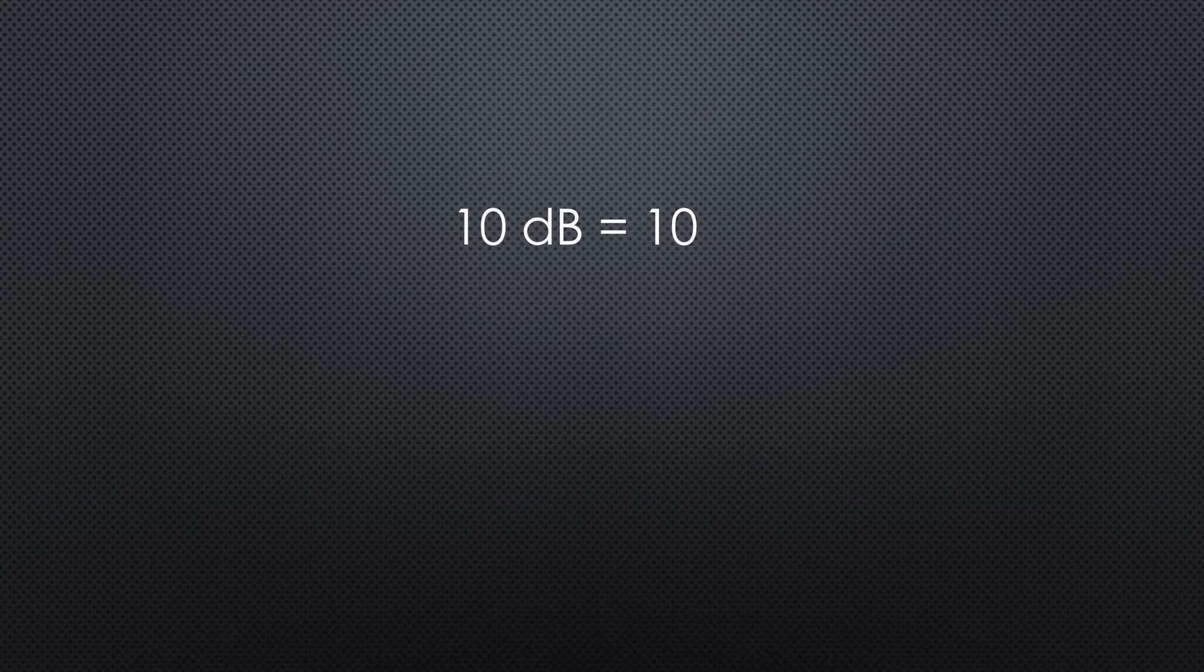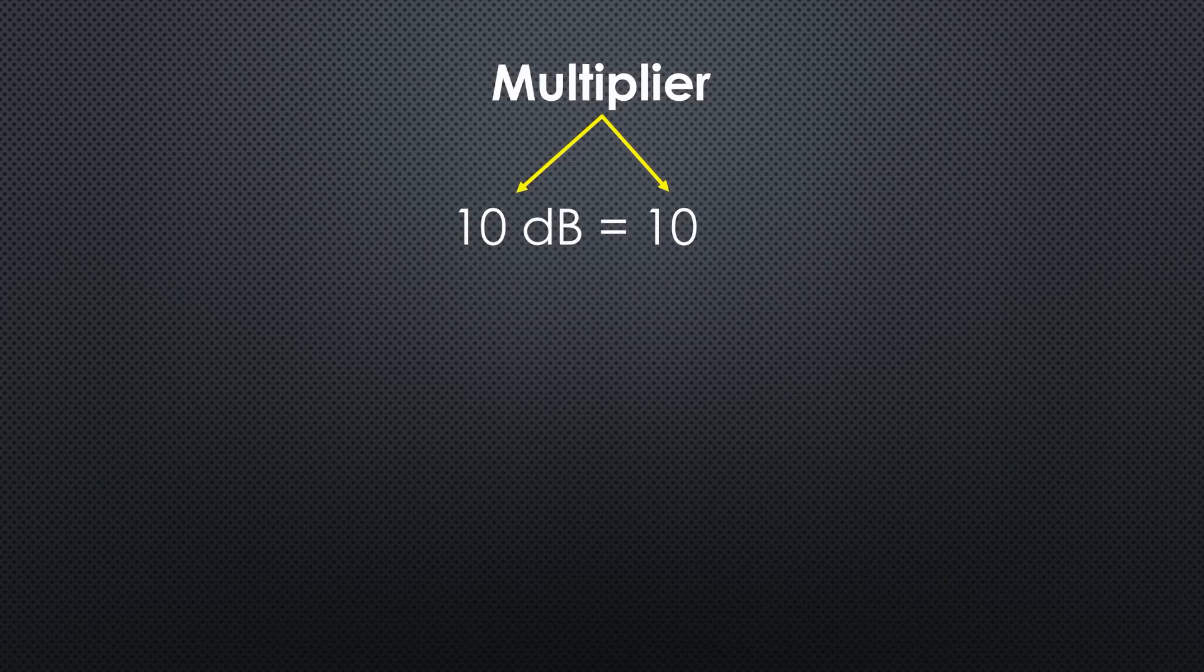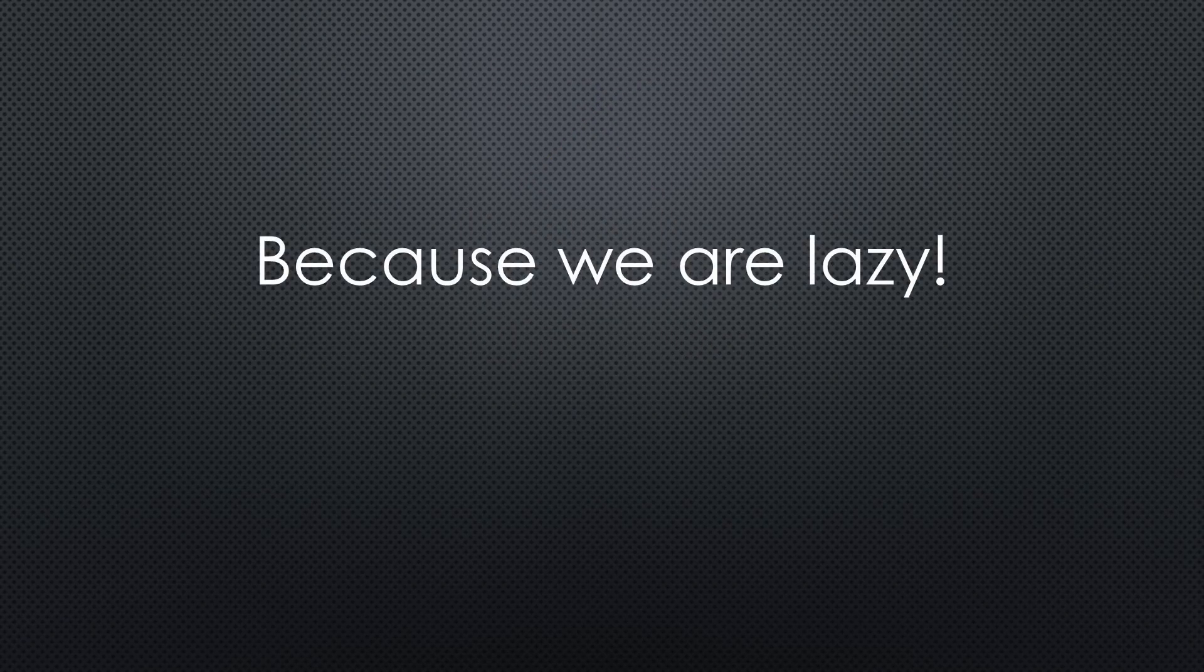1 watt is 30 dBm and 20 watts is 43 dBm. dB is just a logarithmic multiplier. For power, 10 dB is a factor of 10. 30 dB is 1000. Why do we use dB and dBm? Because we are lazy.